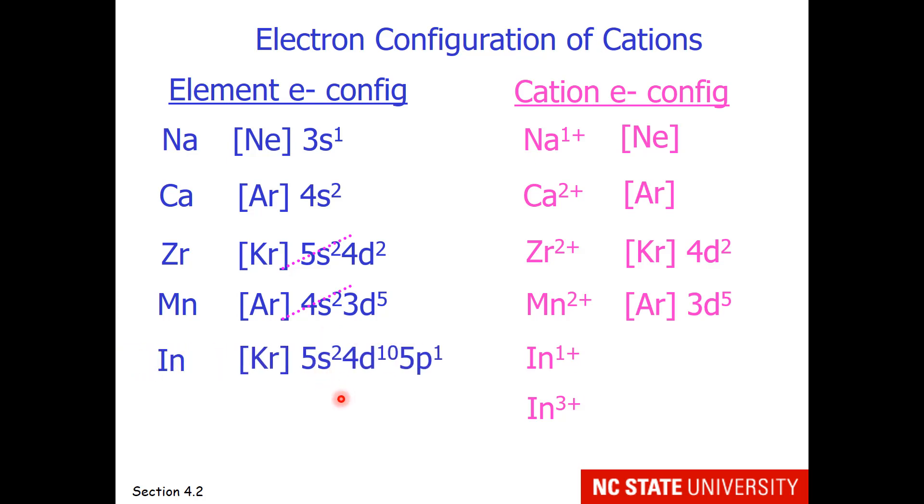How about indium? Indium has this electron configuration where we have 5s2, 4d10, 5p1. If we would like to remove one electron, we'll start with the highest n. And there's a tie with 5s and 5p. So now we'll go to the highest l. And so we will remove the 5p1 electron first.